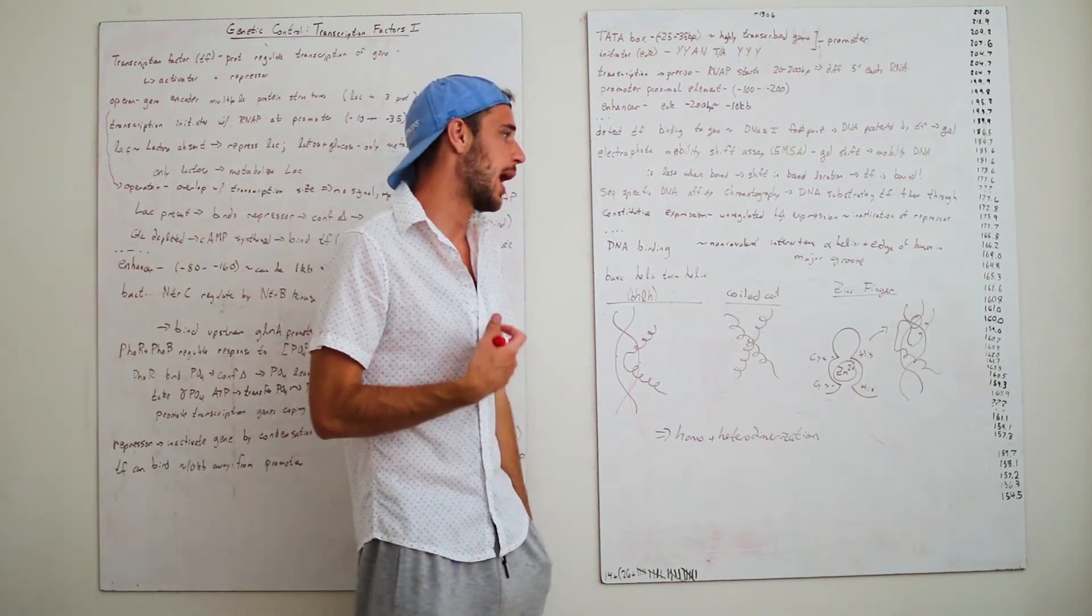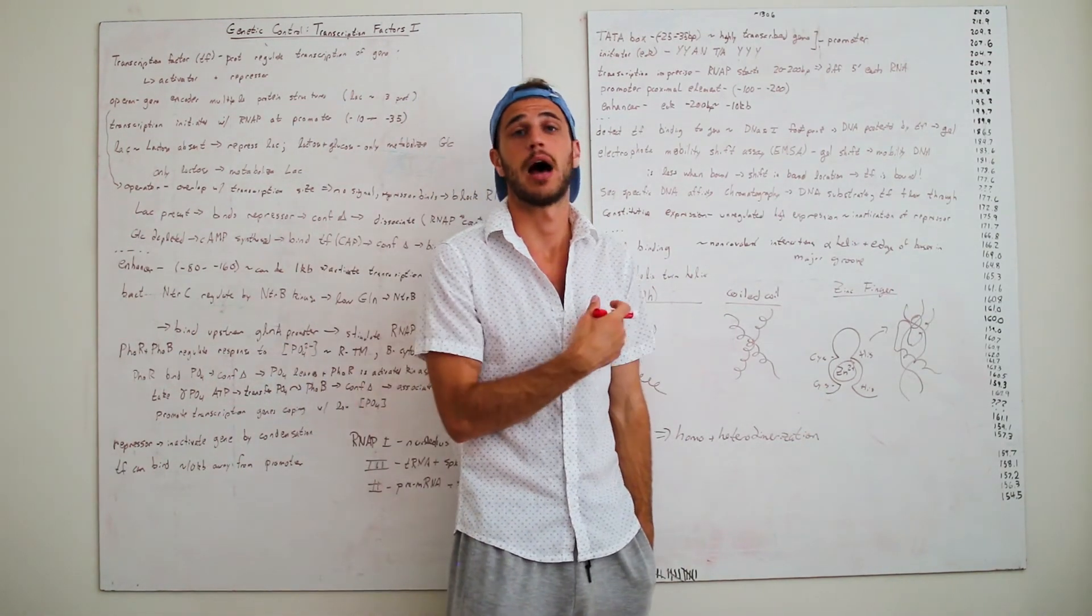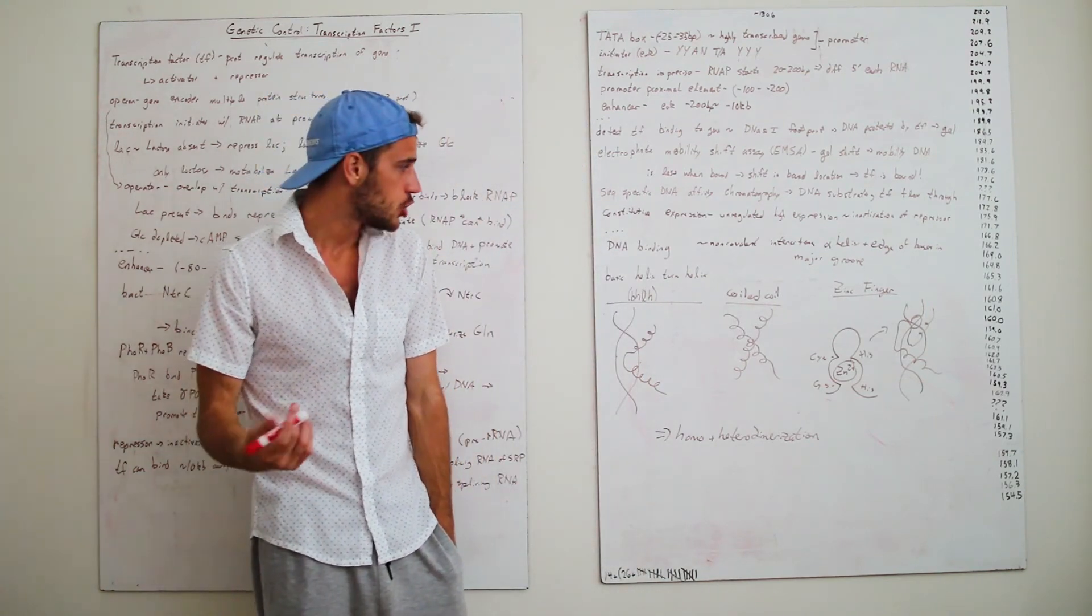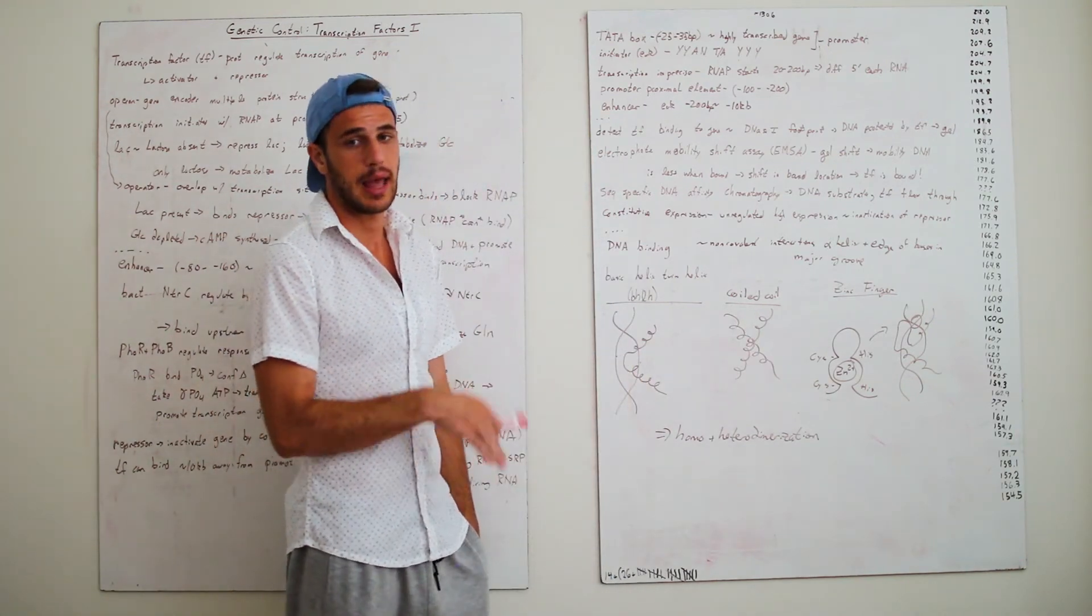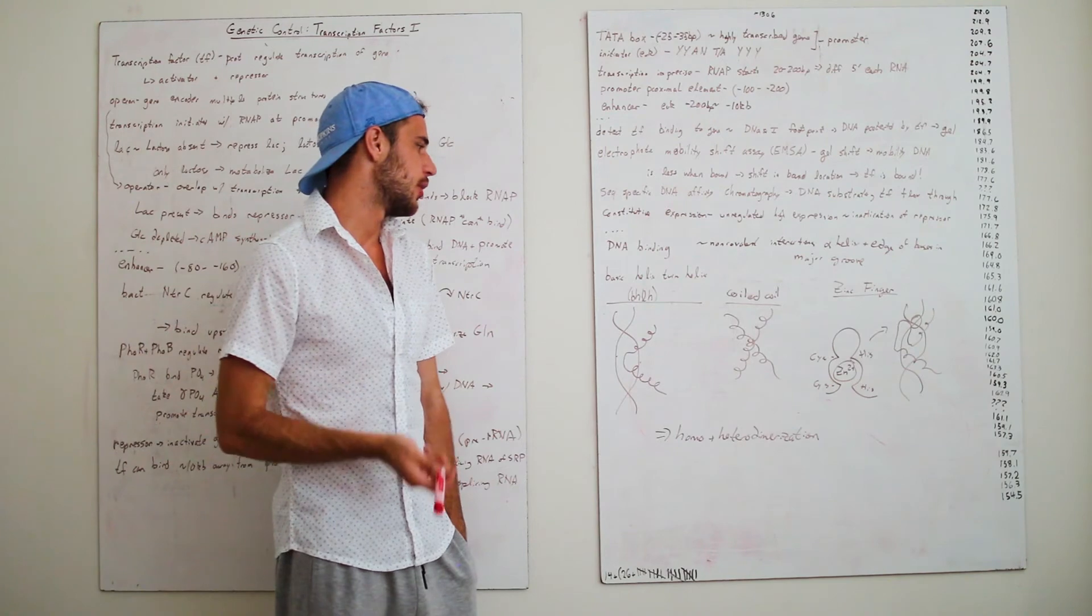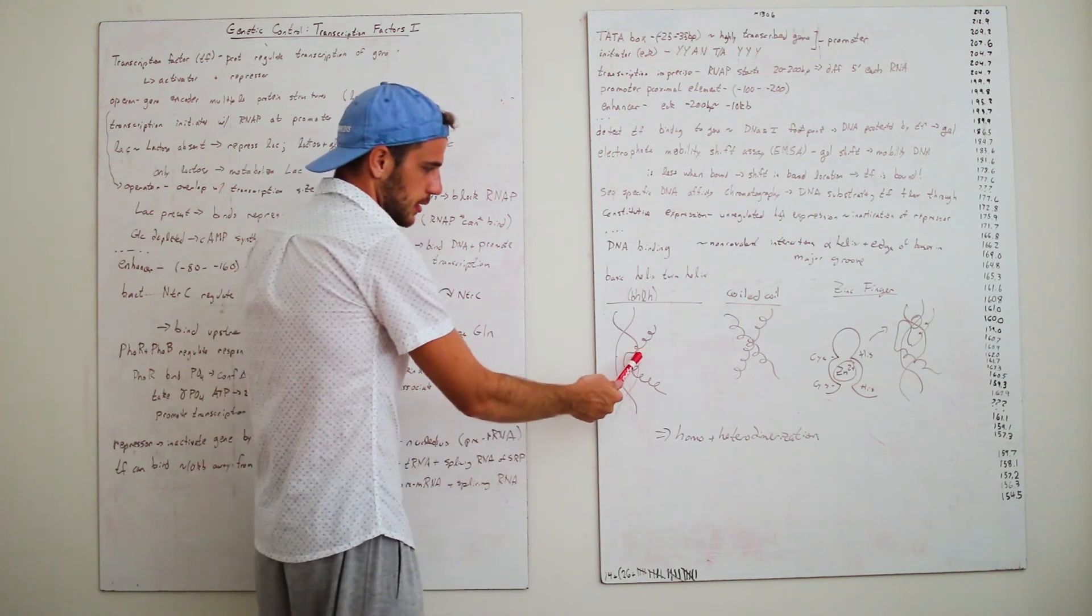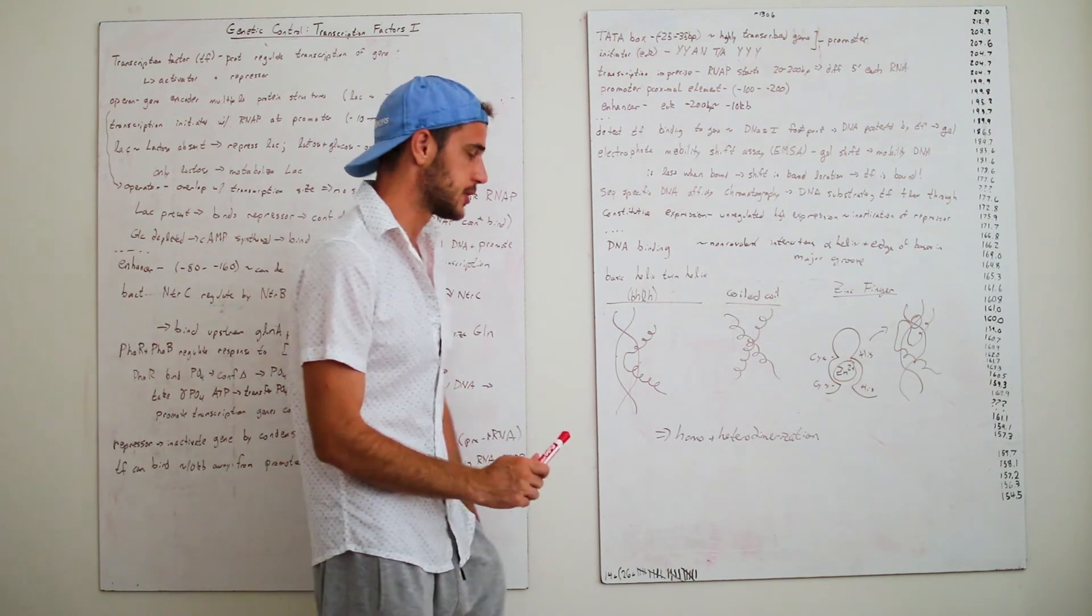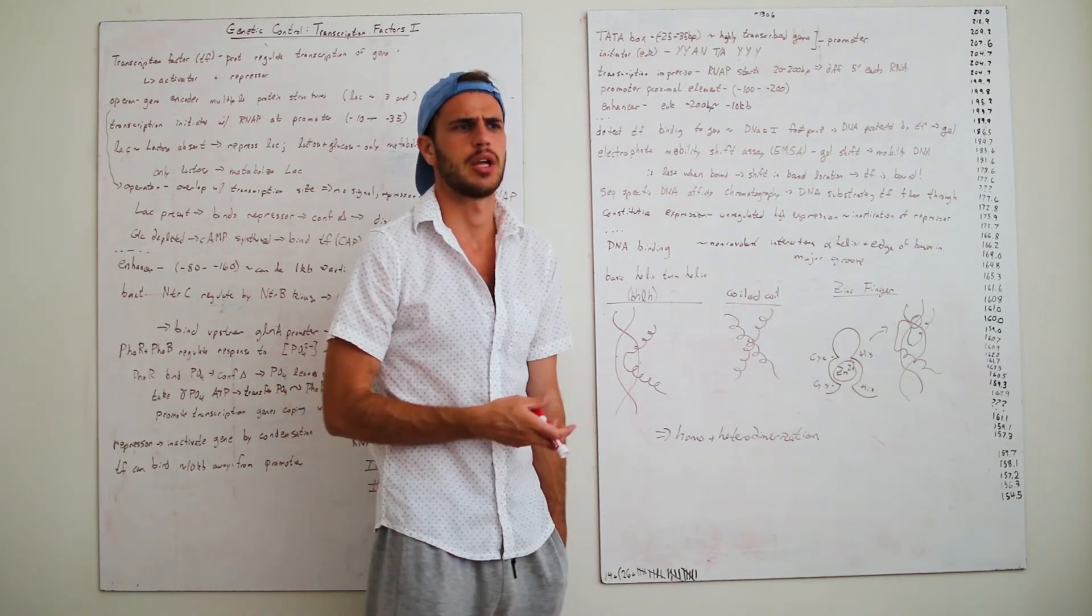And, these motifs, usually, what happens is that there is a non-covalent interaction between an alpha helix and the edge of the bases of the major groove of the DNA. Because, remember, DNA has a major and a minor groove. So, there are, in general, there are three ones I want to talk about for motifs, that you'll actually see again and again. There are plenty of other motifs, but these are just the ones that you'll be like, oh, I've heard of that. And so, the first one is basic helix-turn-helix, which I believe I've covered previously. So, essentially, you have a helix, and then you have a turn right over where the DNA is, and then you have another alpha helix. And, what happens is you have those interactions and hydrogen bonds with the base pairs, as well as the backbone, usually with a lysine residue.